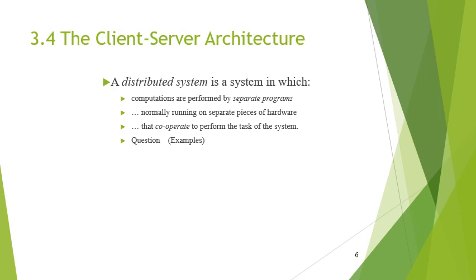Now, client-server architecture. First, let's discuss what software architecture is. In software engineering, it deals with how to organize and connect a set of software modules so that they can work together. There are many well-known architectures, and client-server architecture is one of them. It is a distributed system in which computations are performed by separate programs normally running on separate pieces of hardware, and they cooperate and communicate with each other to perform a single task on the system as a whole. A distributed system is the opposite of a centralized system.